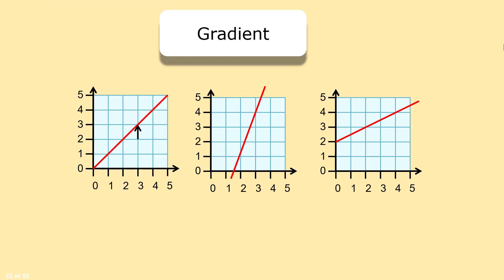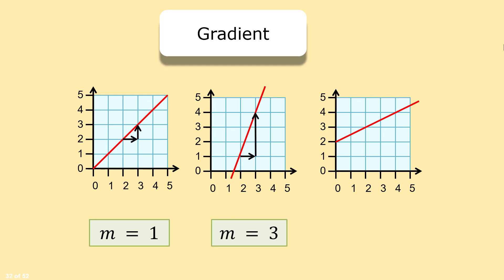Let's explore. The vertical change is 1 and the horizontal change is 1, so 1 divided by 1 is 1. The symbol for gradient is m. Choose any two points — the vertical change, do you see it's 3 units? And the horizontal change is 1 unit. 3 divided by 1 is 3.